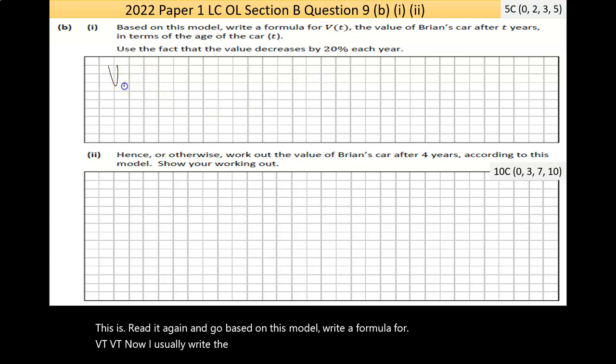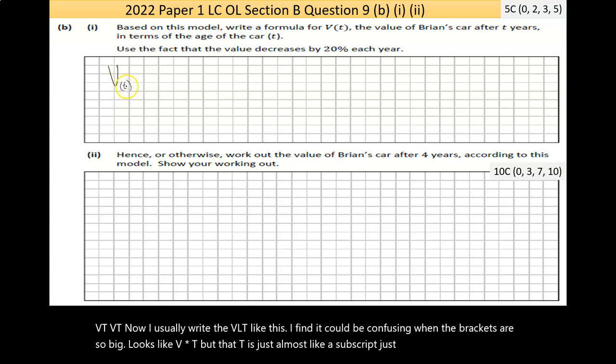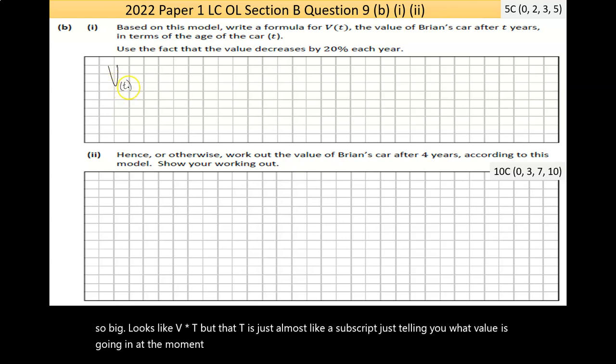I usually write the V(T) like this. I find it can be confusing when the brackets are so big. It looks like it's V times T. But that T is just almost like a subscript, just telling you what value is going in. At the moment, we're looking for a general statement for any year, and then we might use that specifically in maybe part 2.